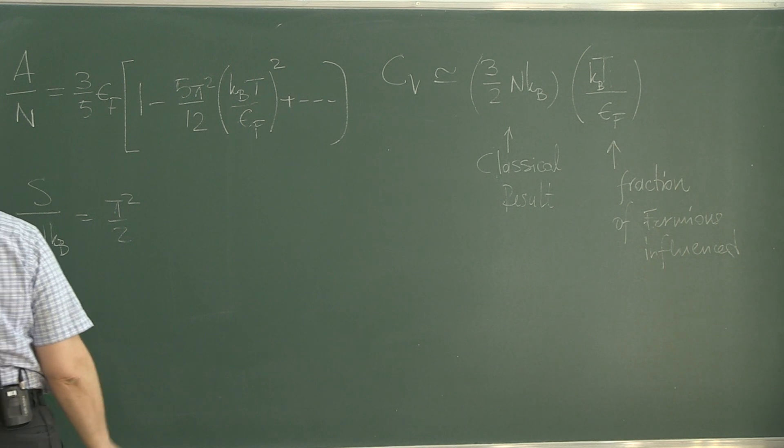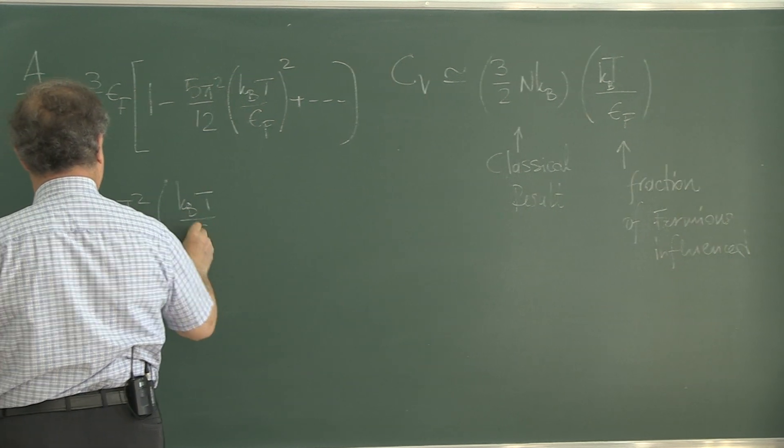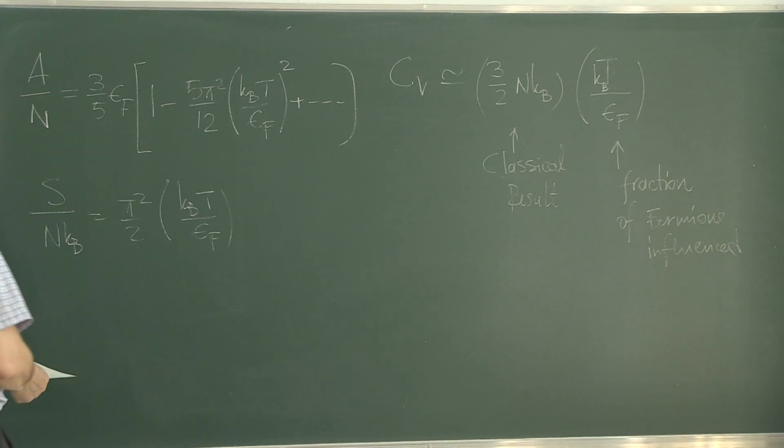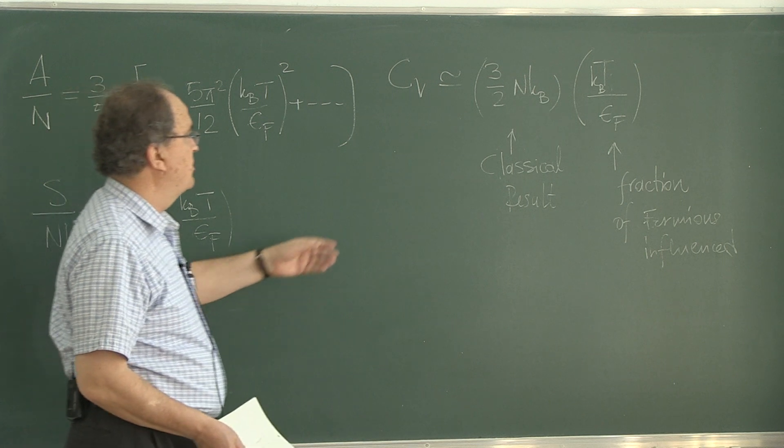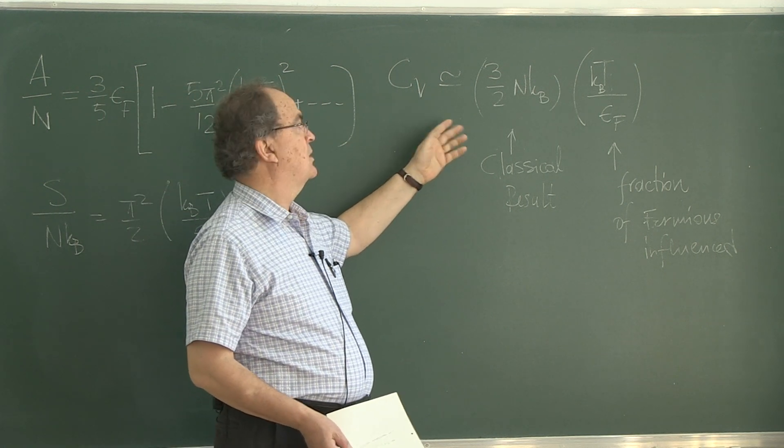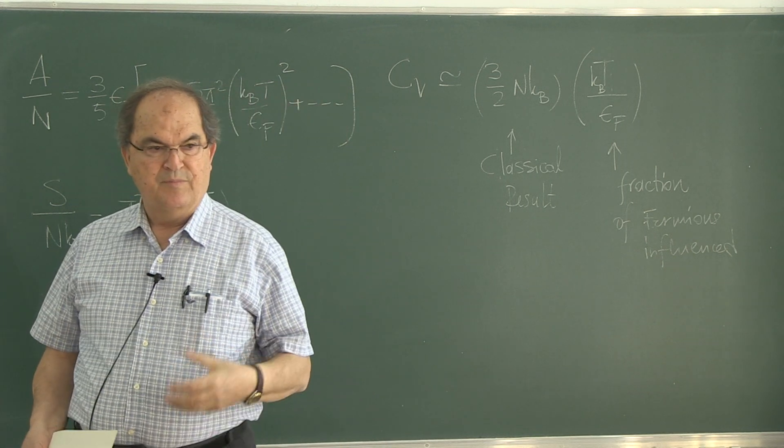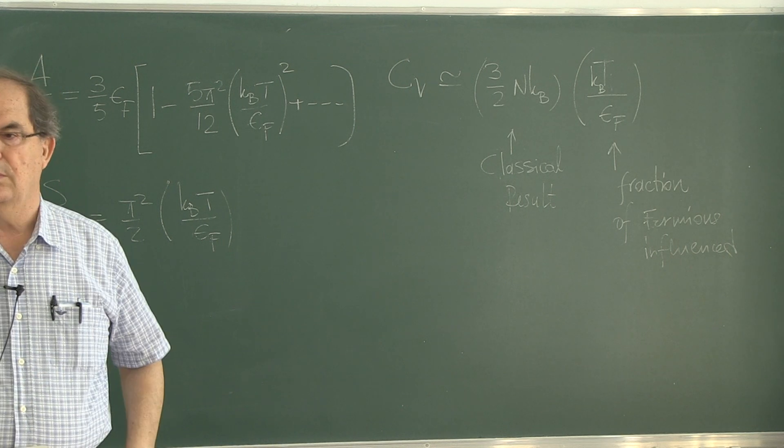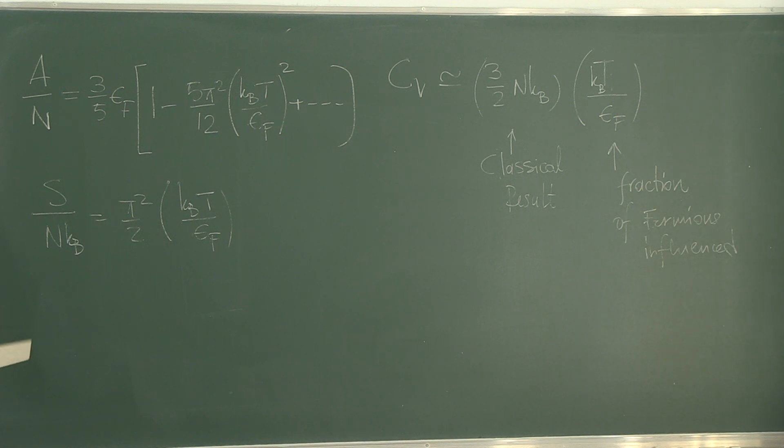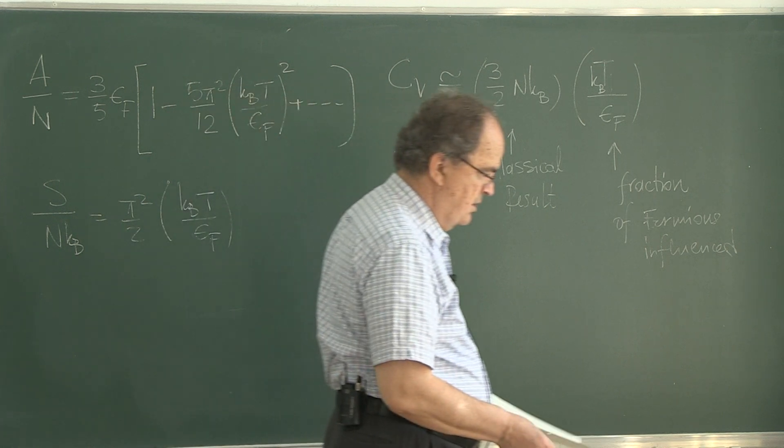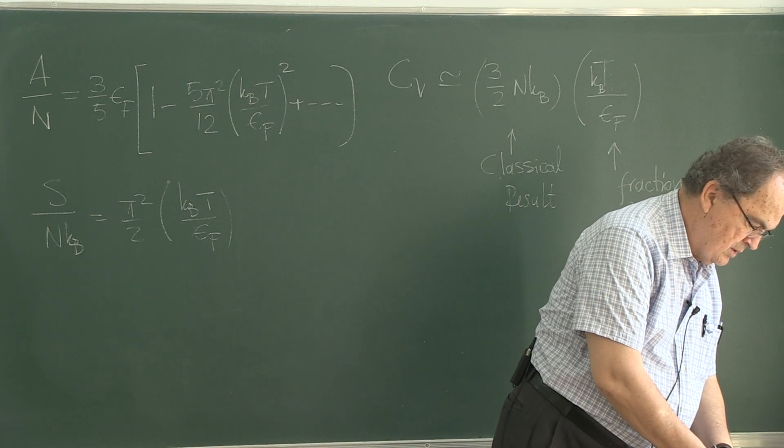Check these, whether these are correct or not. Can you see an important thing here? At low temperatures, as T goes to zero, entropy goes to zero. Isn't it? Extremely important. And same thing for the heat capacity. It also goes to zero as T goes to zero. That means these results are in good agreement with the third law of thermodynamics. They both have to go to zero as temperature goes to zero.